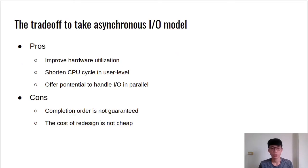Asynchronous I/O sounds great. Why don't we always use asynchronous I/O to design applications? In addition to its advantages, its disadvantages cannot be ignored. As advantages: asynchronous I/O can improve hardware utilization since I/O requests are uploaded to kernel threads, and the affinity of each thread can be decided depending on hardware characteristics. Asynchronous I/O can shorten the CPU cycle at user level — instead of blocking and waiting for I/O completion, execution can continue further instructions. Asynchronous I/O also provides the potential to handle I/O in parallel because applications can issue new I/O operations even when previous operations are not completed. Even with so many advantages, we cannot ignore the disadvantage: since asynchronous I/O allows issuing multiple I/O operations, there is no guarantee that completion is in order, which may be serious when operations are dependent.